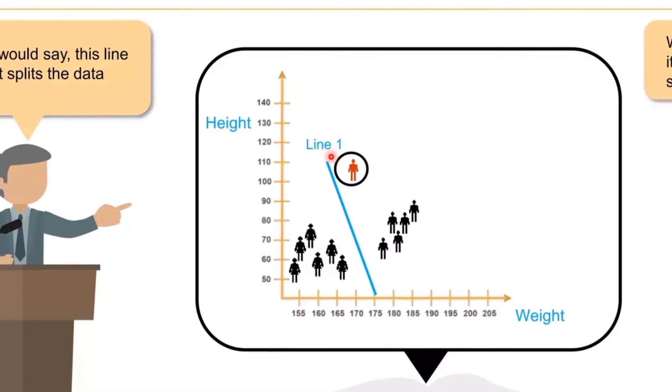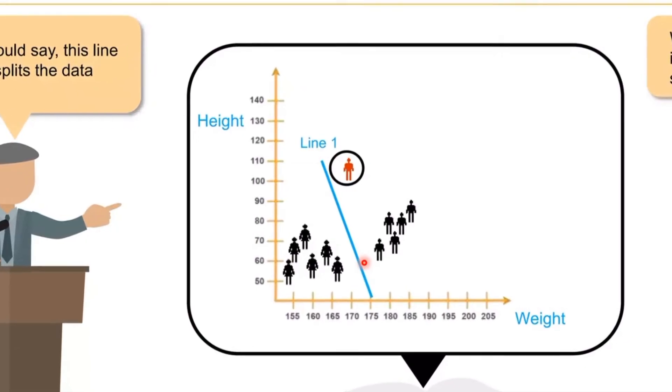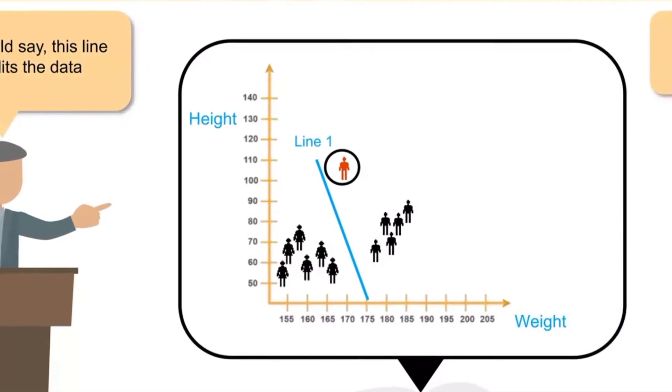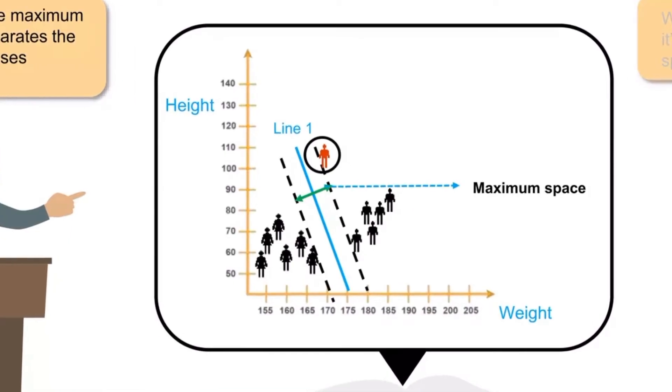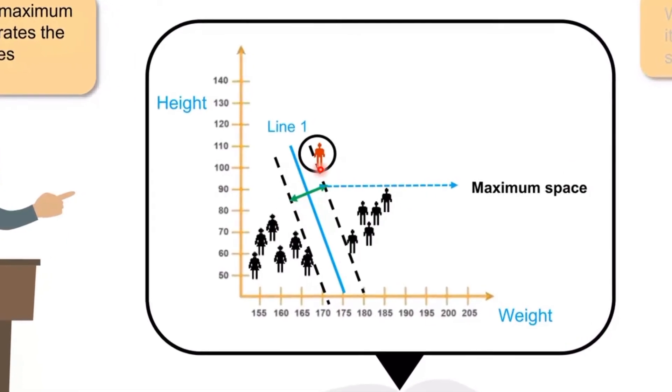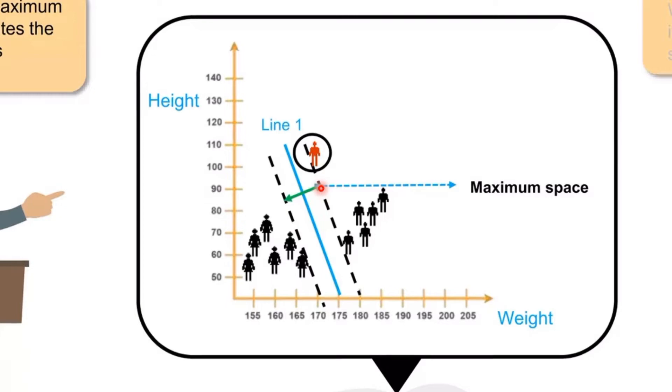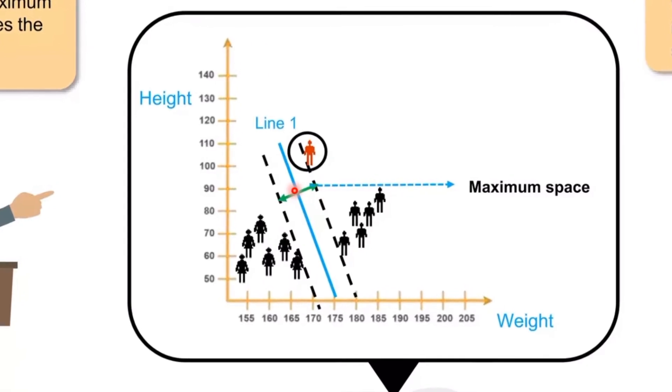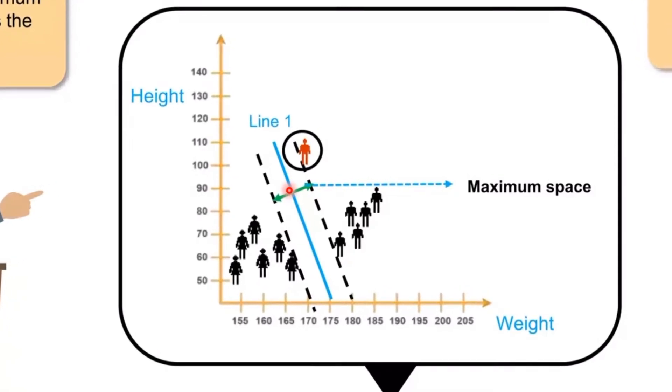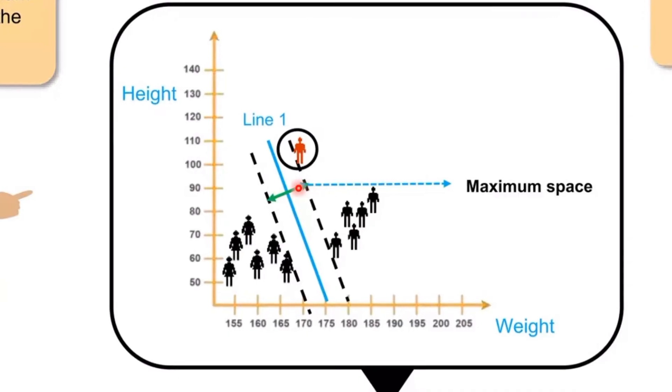This line is the best one. We can see how it is best. This line has the maximum space when compared to line 2. Line 1 is having the maximum space that separates the two classes.